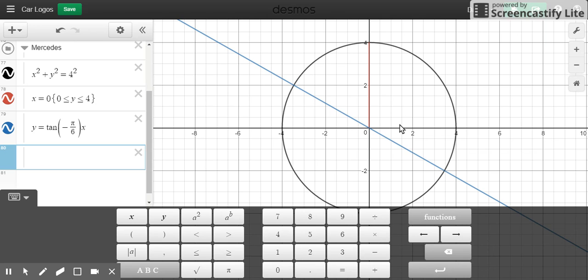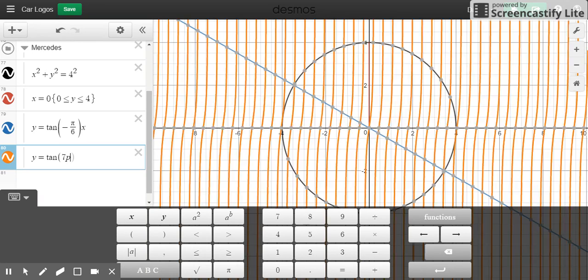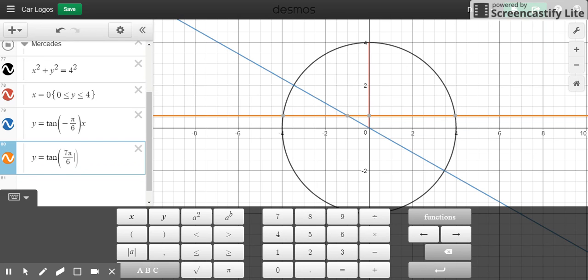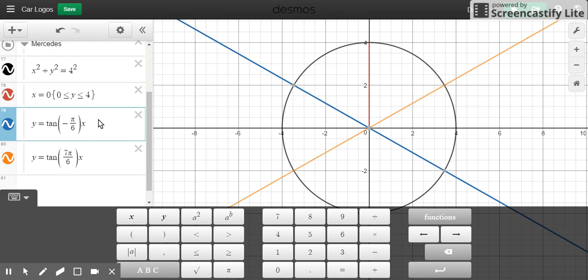As for the other line we're going to go 90 degrees, so that's going to be 180 or just pi. And if we go forward another pi over six that's going to give us the other 120 degrees, or just seven pi over six. So it's going to be tangent of seven pi over six times x. And as for what the bounds are, it's going to go from zero to two, zero to negative two.